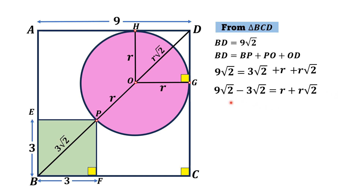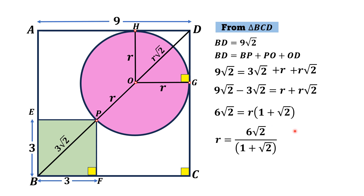The left side becomes 6√2, and on the right side we factor out r, giving 6√2 = r(1 + √2). Dividing both sides by (1 + √2), we get r = 6√2 / (1 + √2).